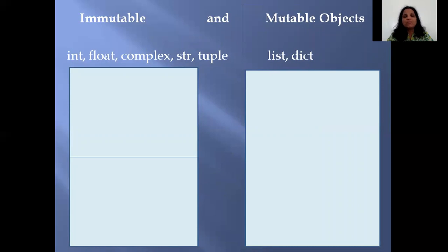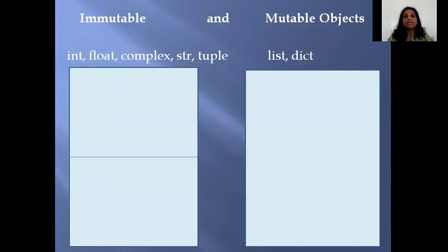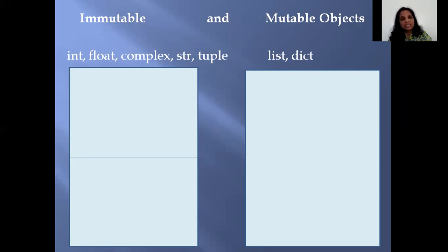A very important topic: the difference between immutable and mutable objects or data. Under immutable, we have int, float, complex, str, tuple, and bool. Under mutable, we have list and dictionary. If you can change the value of an object at that memory location, then it is mutable. If you cannot change the value of the object at a particular memory location, then it's called immutable.